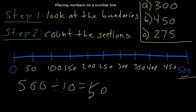What I want you to do is work out where A would go. If we had 300, where would 300 go? If we had 450, where would 450 be? And finally, where would 275 go on this number line?